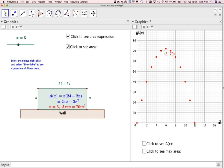And then I can use the graph to find the maximum value. So the area at the moment is 5 and 70, but here at this particular point where x is 6, I can find that the area is 72 metres squared.